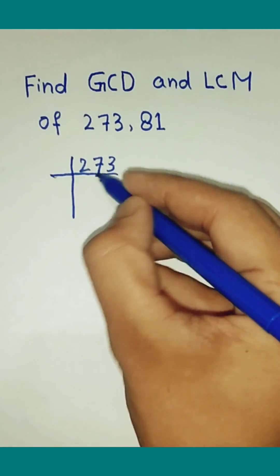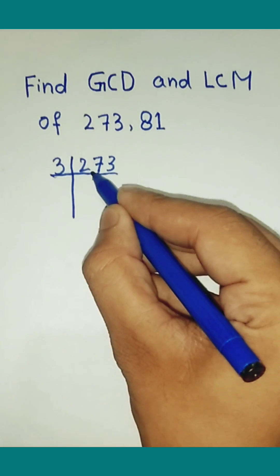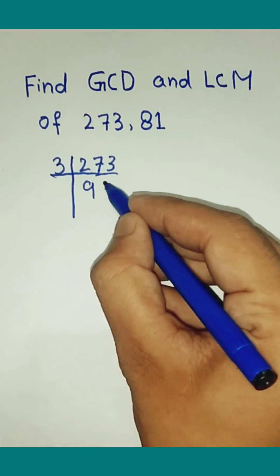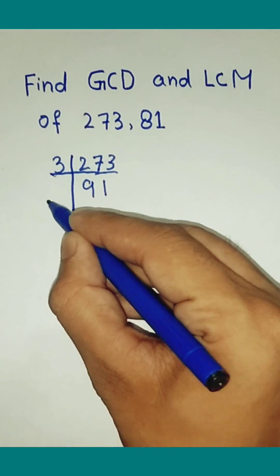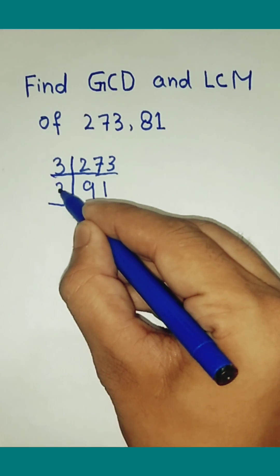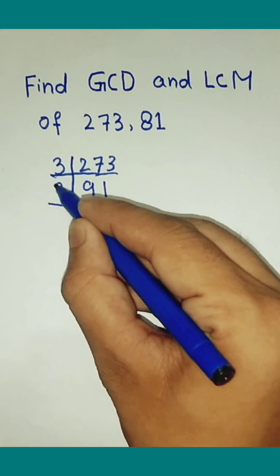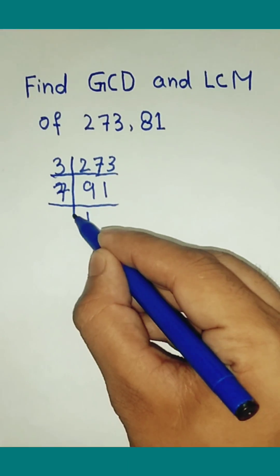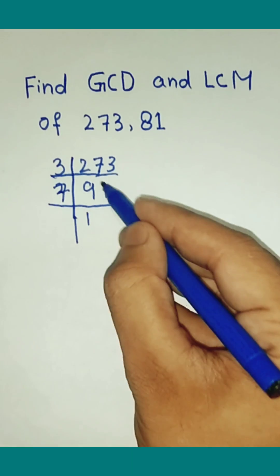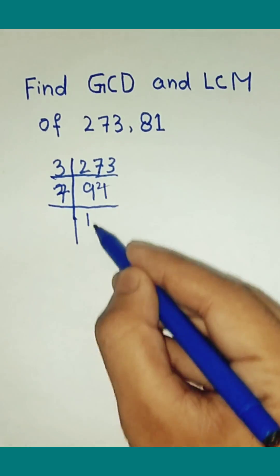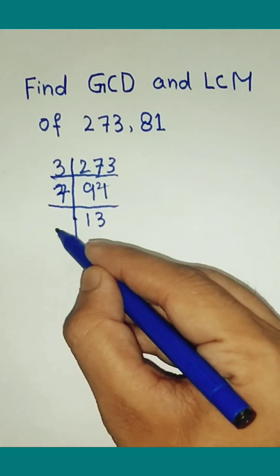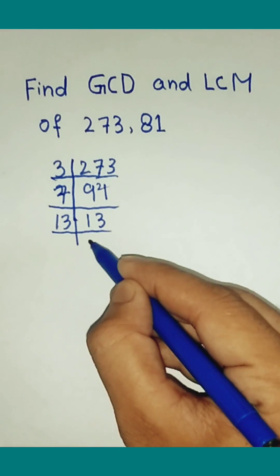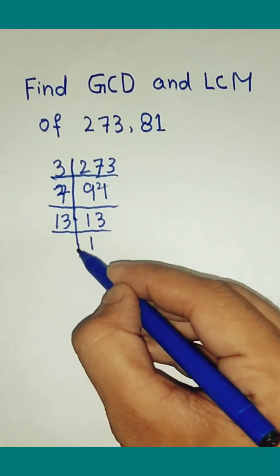3 9s are 27. 3 1s are 3. 7 1s are 7. 7 3s are 21. 13 1s are 13. So the prime factorization of 273 is worked out step by step through division.